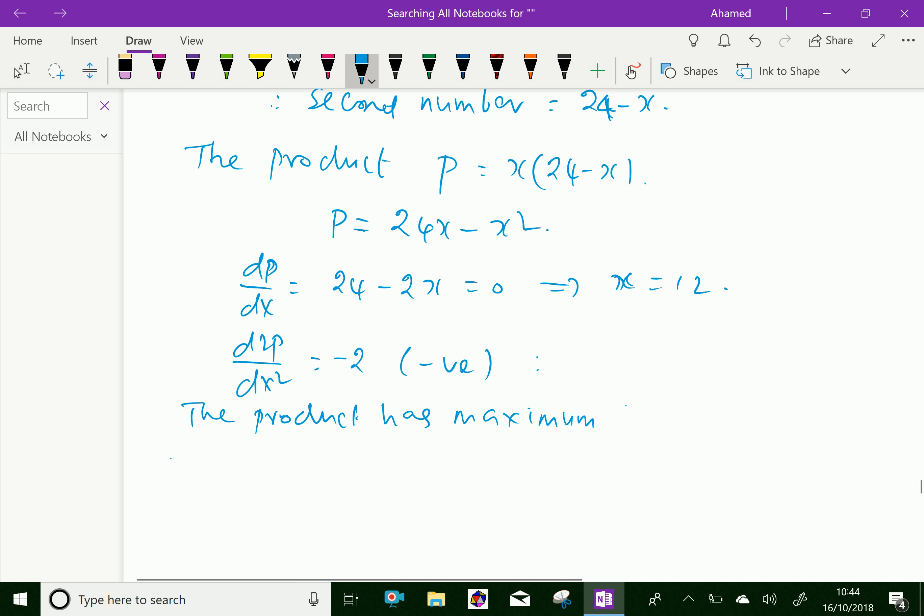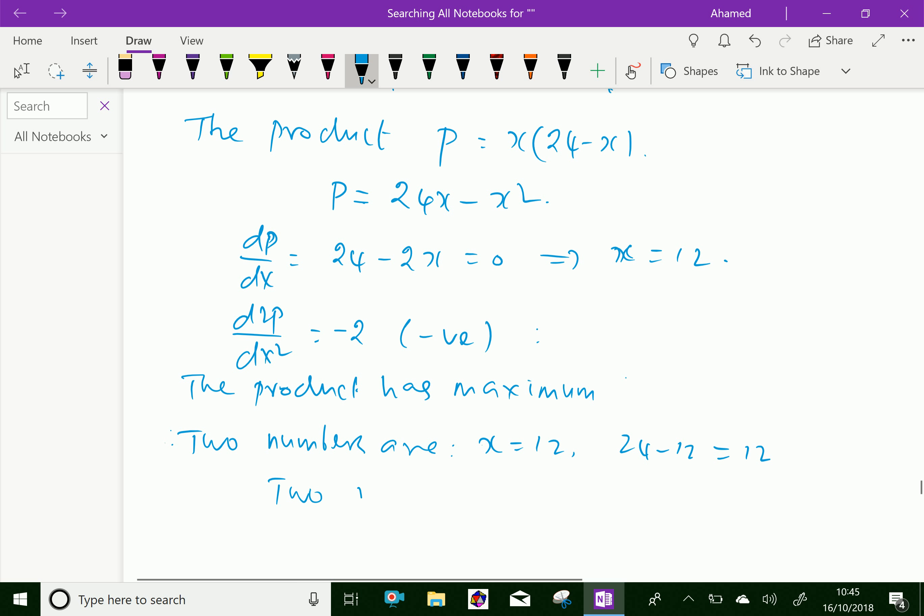The two numbers are x equals 12 and 24 minus 12, which is also 12. The product of 12 and 12 is 144, which is maximum, and the sum is 24.